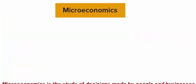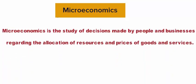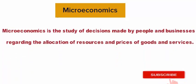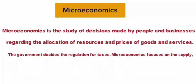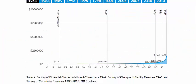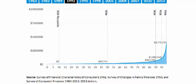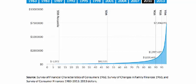What is microeconomics? Microeconomics is the study of decisions made by people and businesses regarding the allocation of resources and prices of goods and services. The government decides the regulation for taxes. Microeconomics focuses on the supply that determines the price level of the economy. It uses the bottom-up approach strategy to analyze the economy. In other words, microeconomics tries to understand human choices and resource allocation.